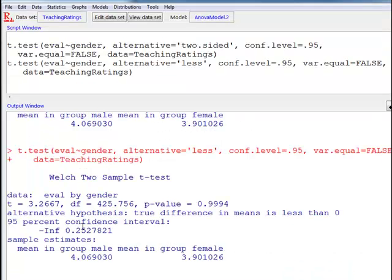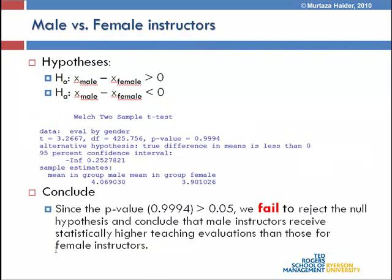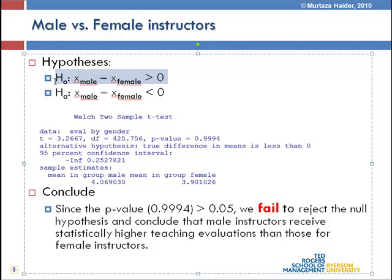Looking at the test output, the same average values for male and female are reported. The only difference is the p-value, which is 0.9994. Since the p-value is greater than 0.05, we fail to reject the null hypothesis. This null hypothesis — that males' teaching evaluation is higher than that of females — we fail to reject. We conclude that male instructors do in fact receive statistically higher teaching evaluations than those for female instructors.